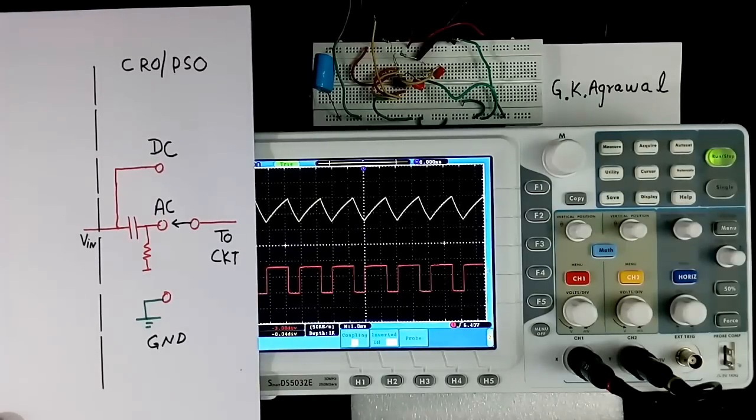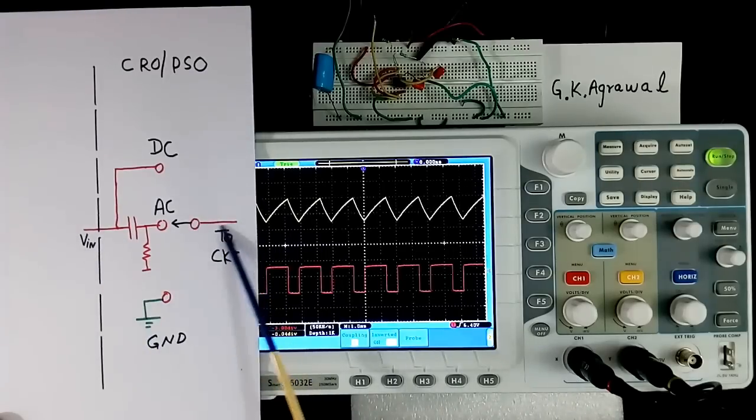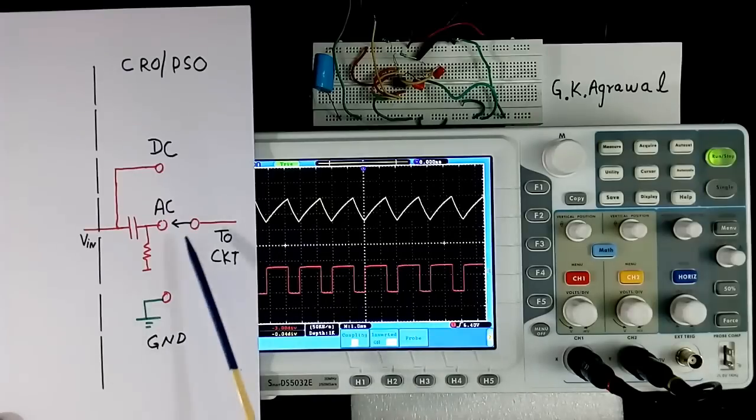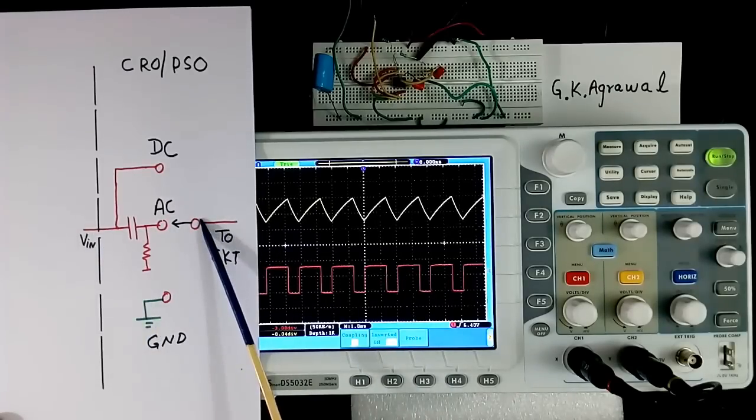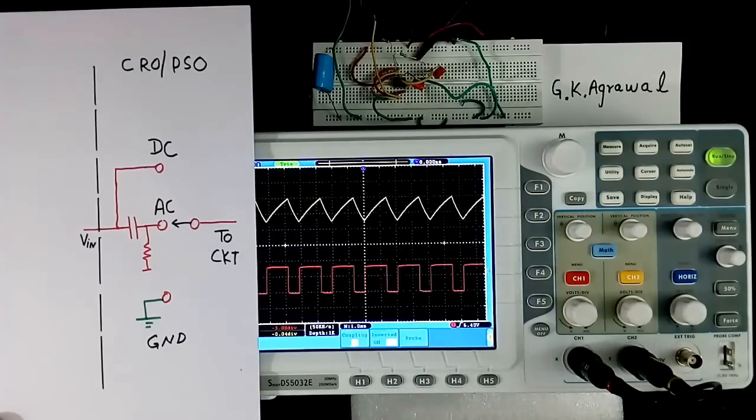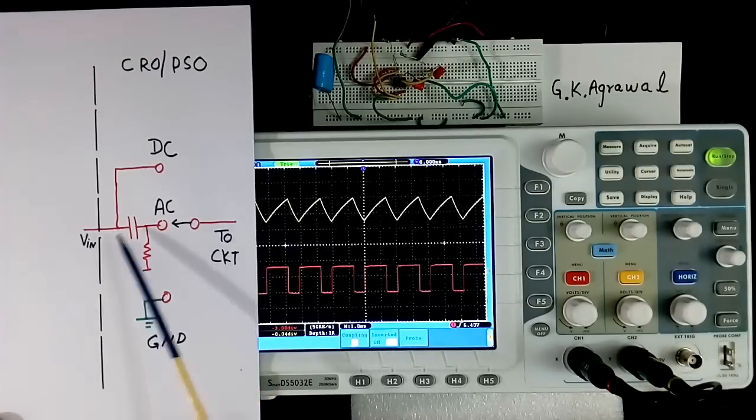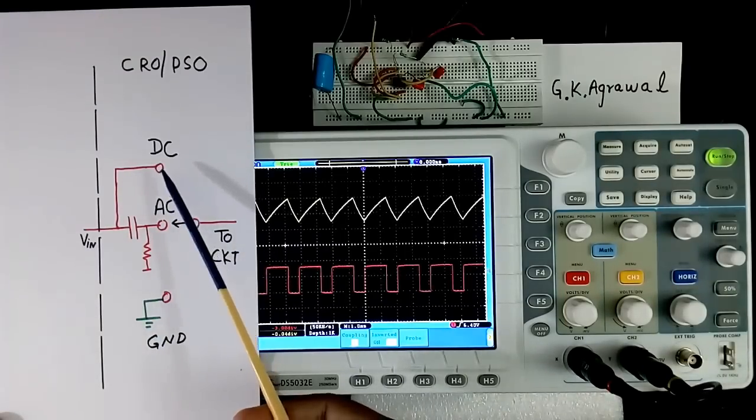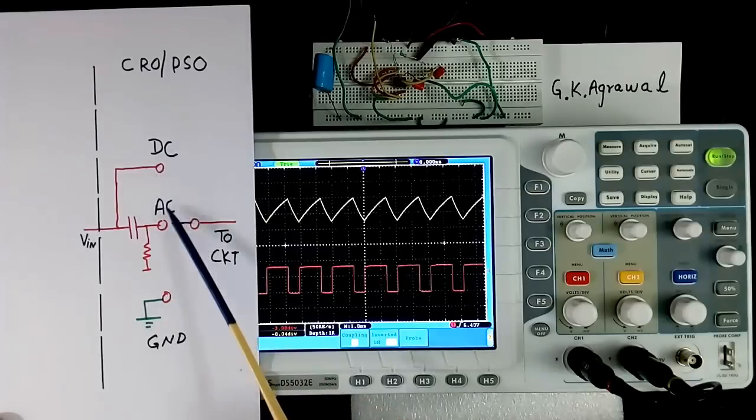Now we will discuss coupling. Suppose this is input signal. This input signal is this. And this is circuit inside of CRO. So there are 3 ways to connect this input to circuit. To select these 3 ways, there will be switch. In my case, this switch here and here. In some CRO switch may be here. Depending on CRO, switch location may change. What happens? There are 3 types of connections. DC, AC and ground.